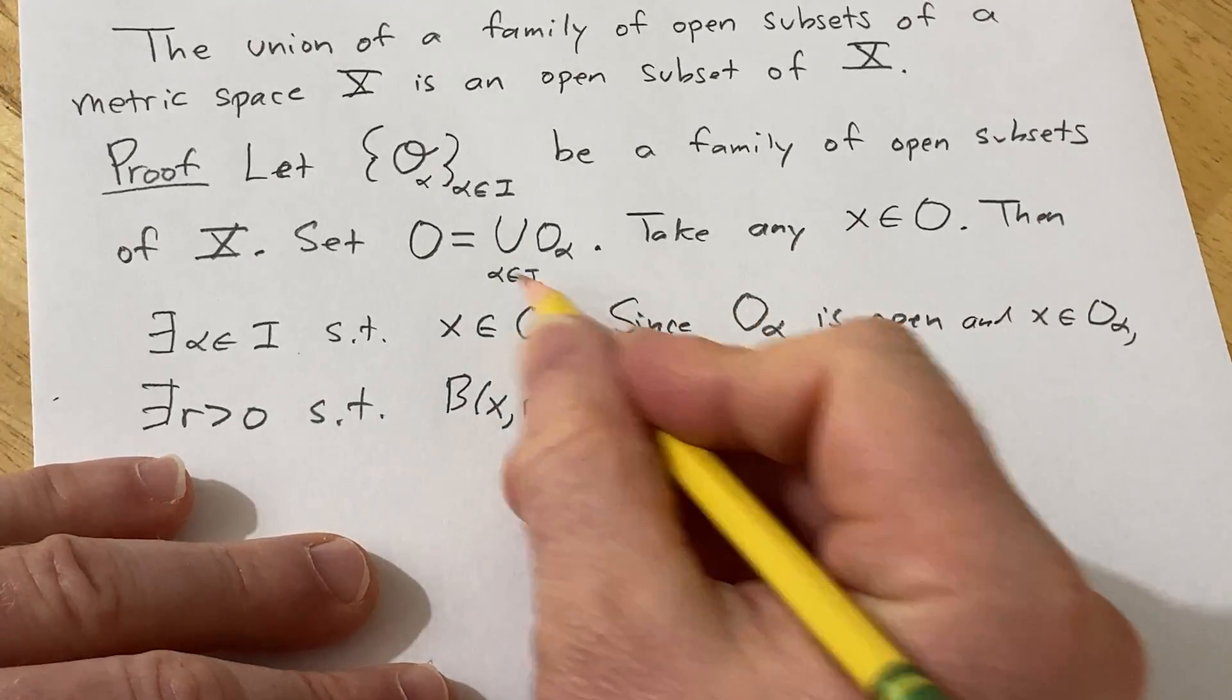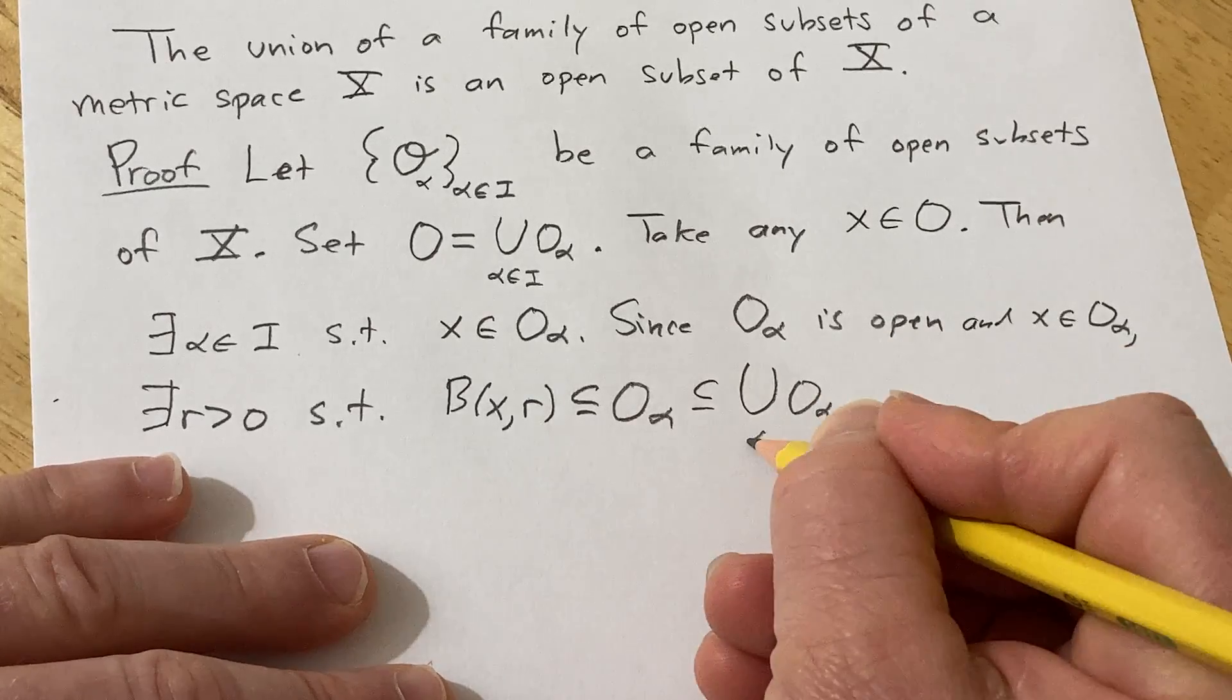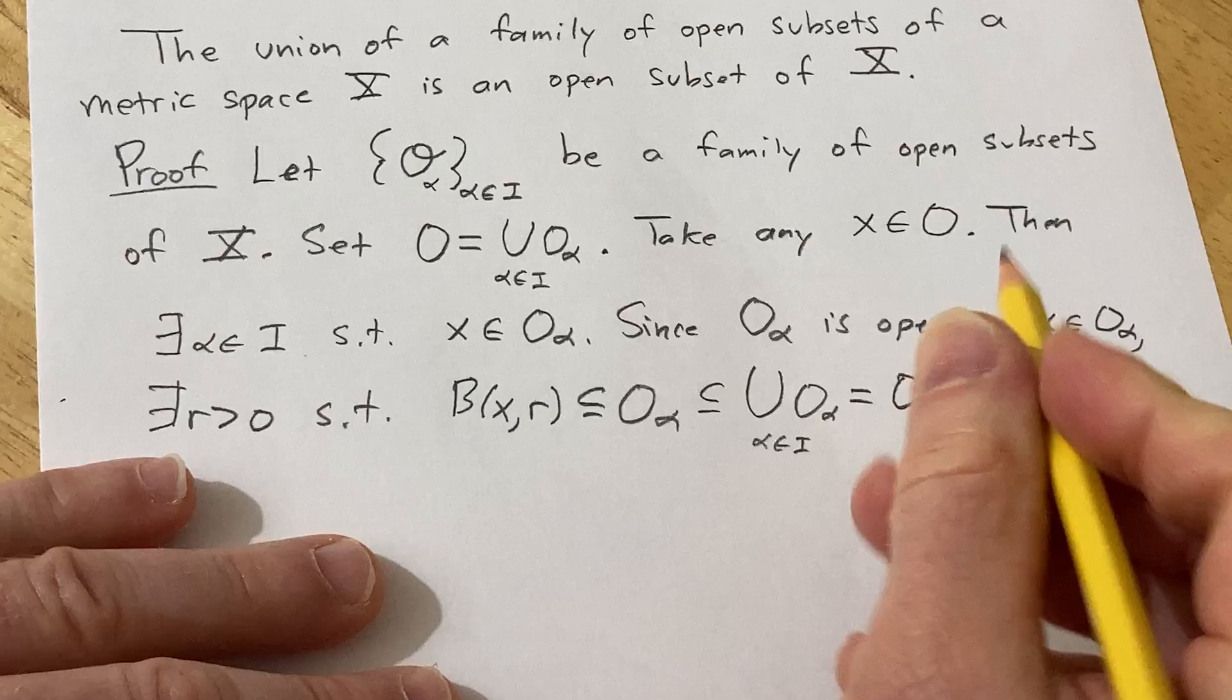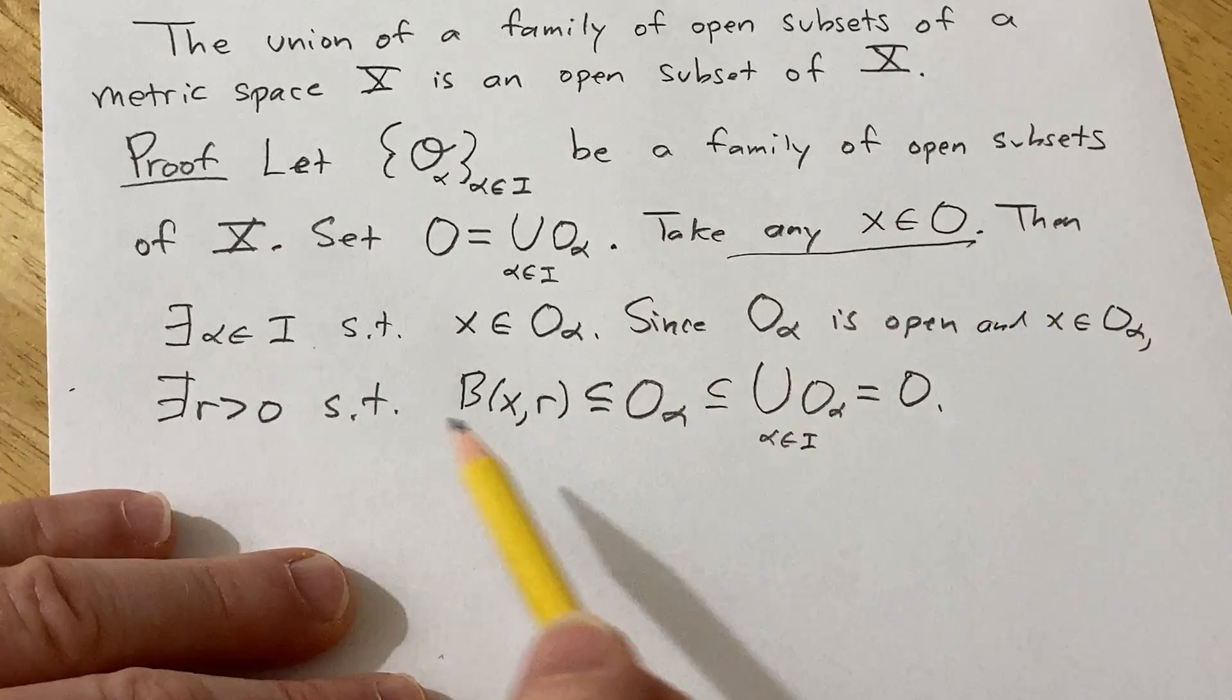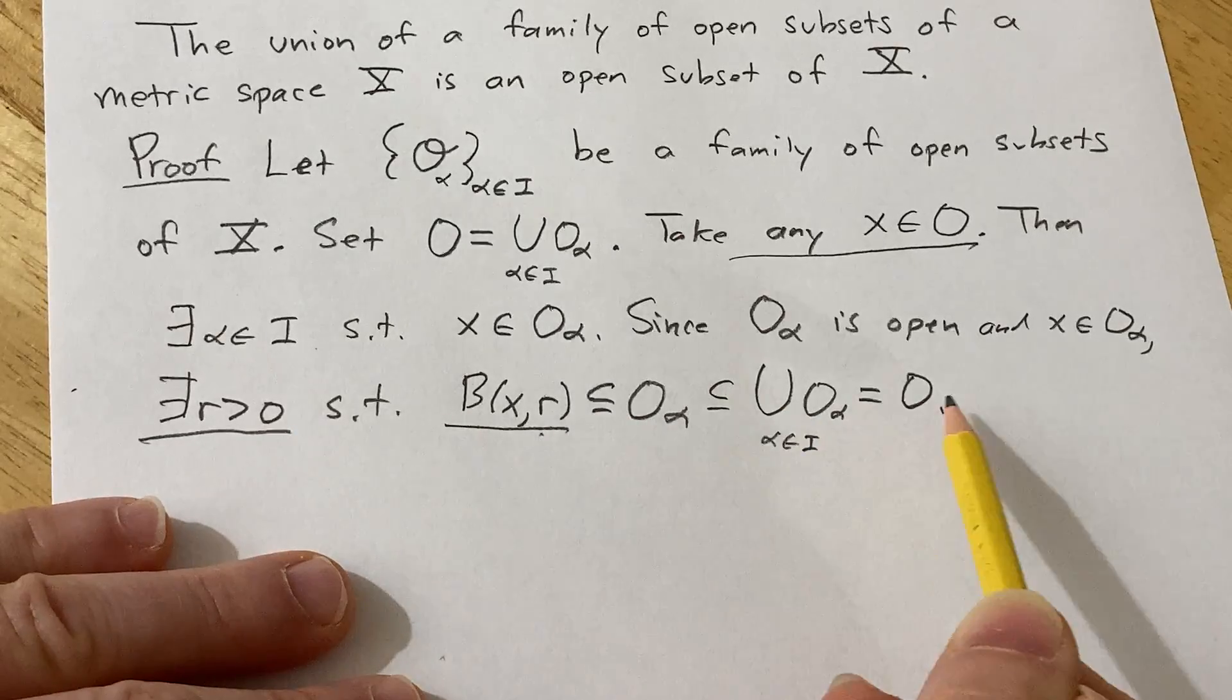And well, this is contained entirely in the union of the O sub alphas as alpha runs through the index at i, which is equal to O. So given any x in O, we found an open ball of positive radius that's contained entirely in O.